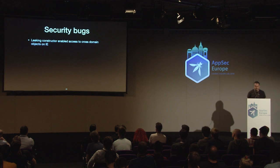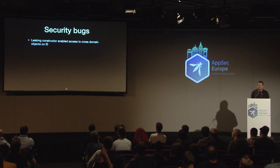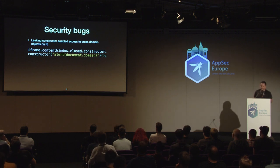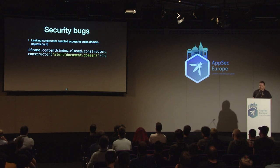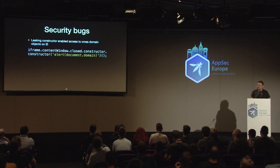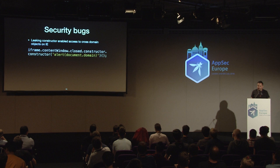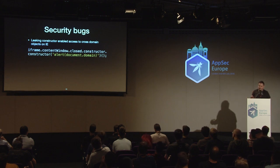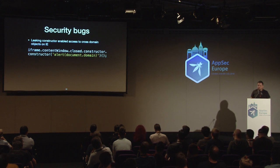This one I reported privately to Microsoft. The 'closed' property was leaking a cross-domain constructor. The closed property applies to window objects and tells you if the window is closed — this also applies to iframes. Microsoft forgot about this property and weren't doing any checks on it. It was a cross-domain Boolean object. If you get the constructor of the cross-domain Boolean object, you get the Boolean constructor. The constructor of that is a function constructor, which allows arbitrary code execution. When you execute alert, it tells you the domain of the cross-origin iframe — basically universal XSS.